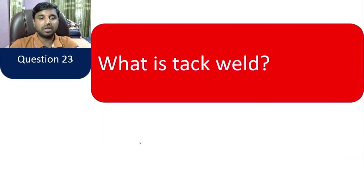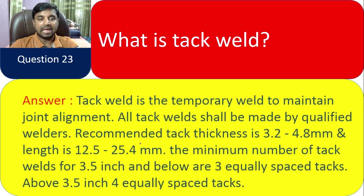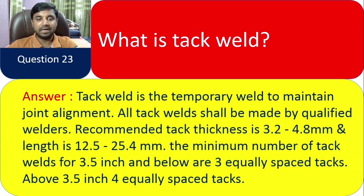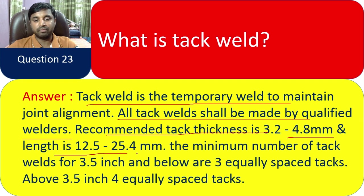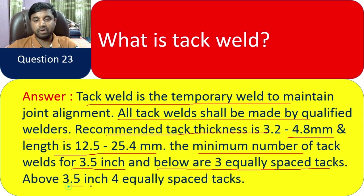Question 23: What is tack weld? Tack weld is a temporary weld to maintain joint alignment. All tack welds shall be made by a qualified welder. Recommended tack thickness is 3.2 to 4.8 mm and length is 12.5 to 25.4 mm. The minimum number of tack welds for pipe 3.5 inches and below is three equally spaced tacks; above 3.5 inches, four equally spaced tacks.